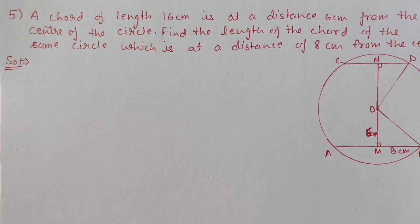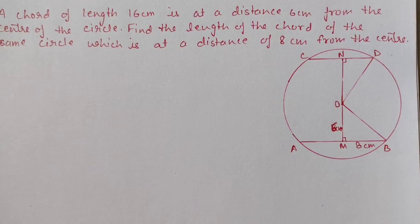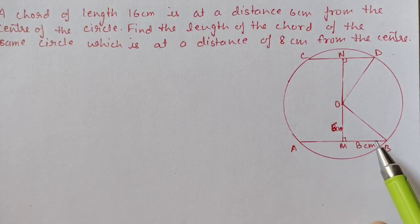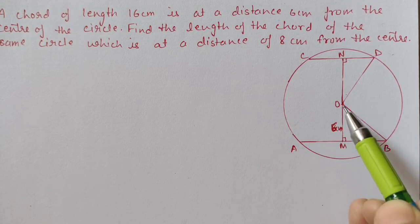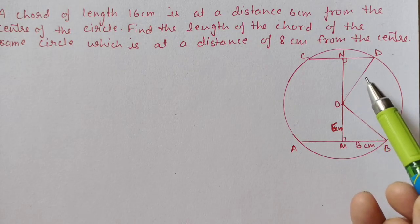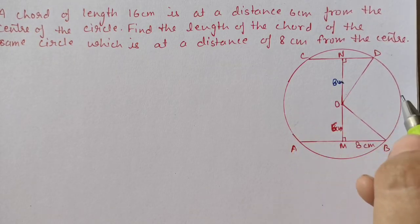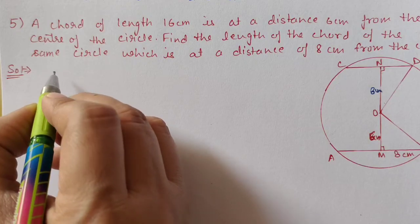Question 5: A chord of length 16 cm is at a distance of 6 cm from the center. Find the length of another chord of the same circle at a distance of 8 cm from the center. In the figure, the first chord is 16 cm, so 8 cm on each side, with a perpendicular distance of 6 cm. We first use the Pythagorean theorem in triangle OMB to find the radius. Then we use that radius for the second chord, which is at 8 cm from the center.